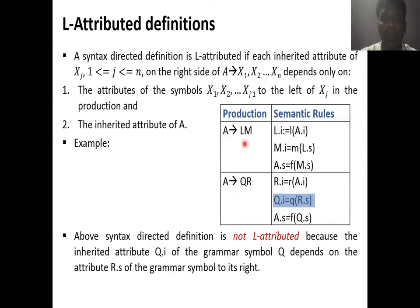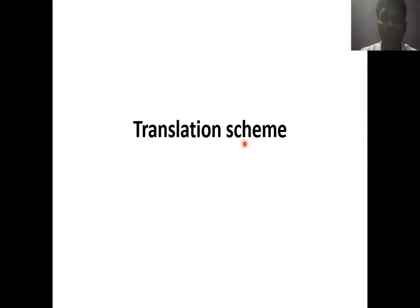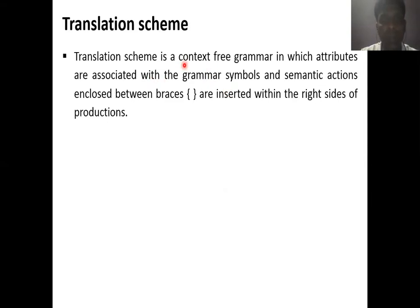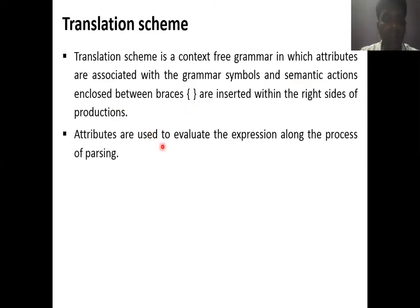Now we are moving to translation schemes. Till now we have been writing syntax directed translation — a context-free grammar with semantic actions written separately. In a translation scheme, it is possible to write the semantic action directly inside the context-free grammar production itself, enclosed between opening and closing curly braces. Attributes are used to evaluate the expression along the process of parsing, going top to bottom and left to right, and whenever we reach a node with a semantic action, we directly execute it.